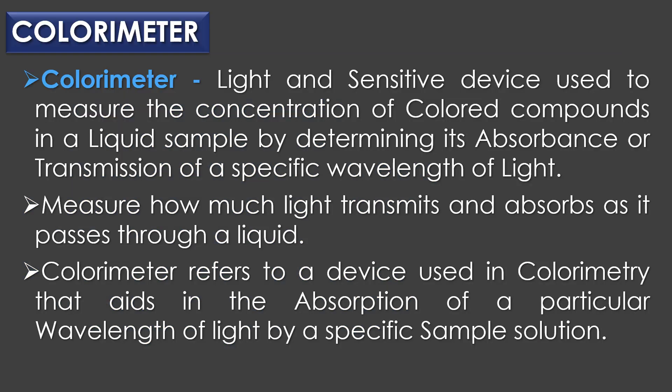A colorimeter is a light and sensitive device used to measure the concentration of colored compounds in a liquid sample by determining its absorbance or transmission of a specific wavelength of light. The colorimeter is employed to measure how much light transmits and absorbs as it passes through a liquid. It refers to a device used in colorimetry that aids in the absorption of a particular wavelength of light by a specific sample solution.